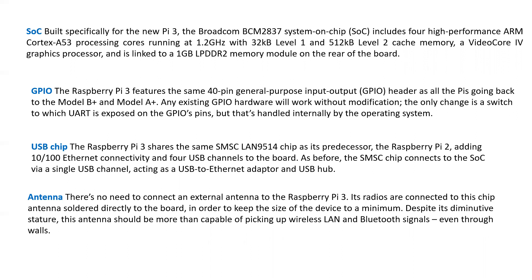Four processors are running in parallel with a frequency of 1.2 gigahertz. It has two level cache memory — level one cache is 32 kilobyte and level two cache is 512 kilobyte. Level one is the fastest with smaller size, while level two is slightly slower with greater size. Level one cache is made up of static RAM, and level two is made up of dynamic RAM.